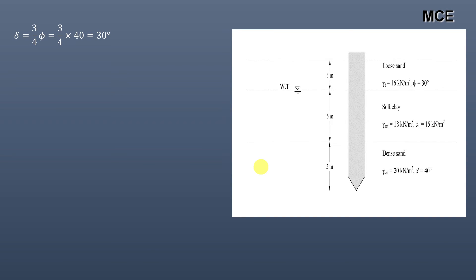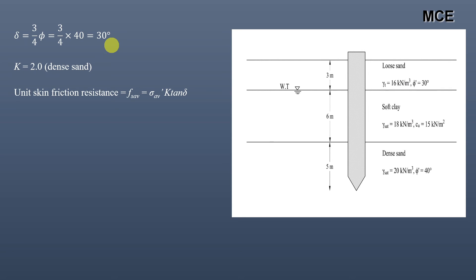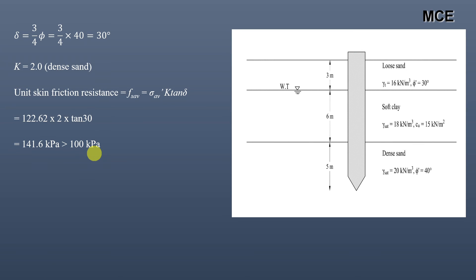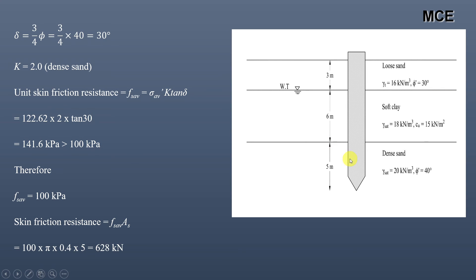The friction angle between the soil and the pile in the dense sand layer is 3/4 of 40 degrees = 30 degrees. The lateral earth pressure coefficient K for dense sand is 2. The unit skin friction resistance = average effective stress × K × tan(delta) = 122.62 × 2 × tan(30°) = 141.6 kPa. This is greater than 100 kPa, which is the limit, so unit skin friction resistance is taken as 100 kPa. The skin friction resistance = 100 × π × 0.4 × 5 = 628 kN.